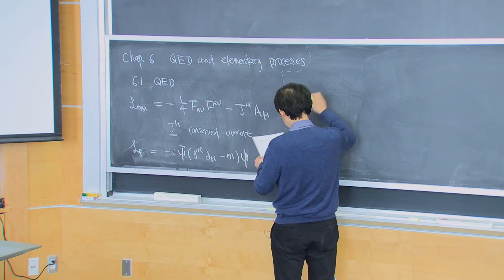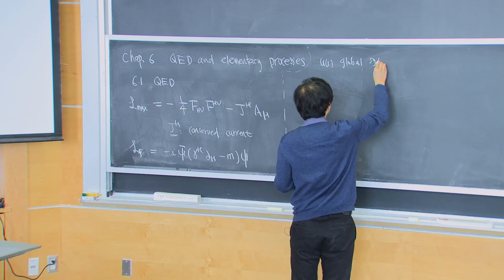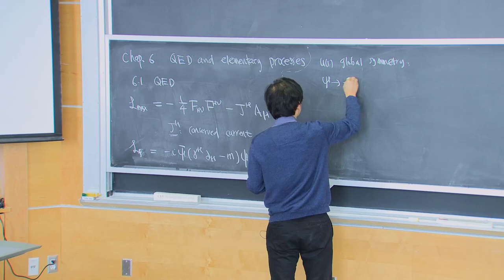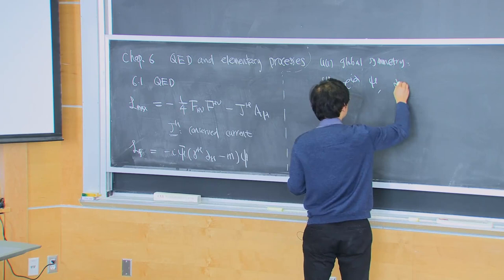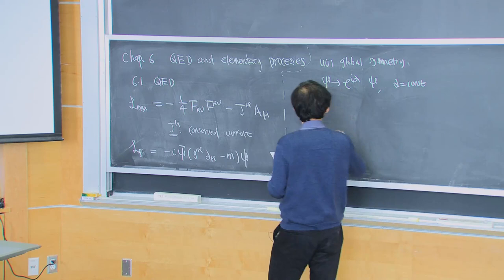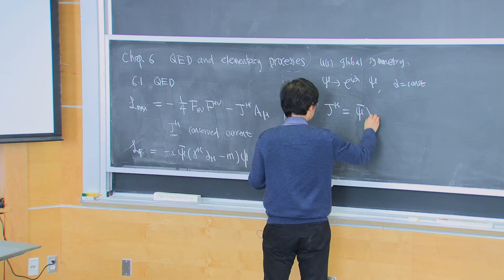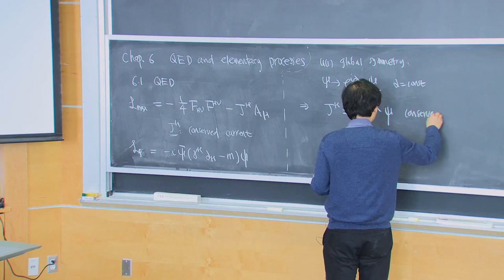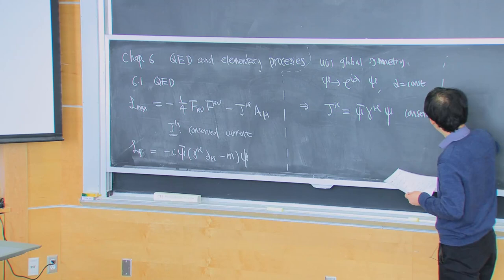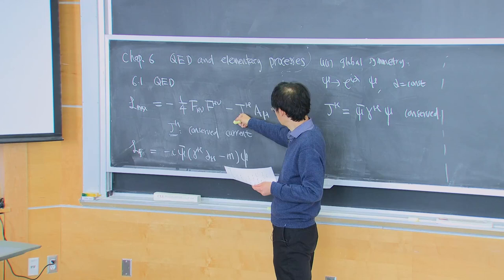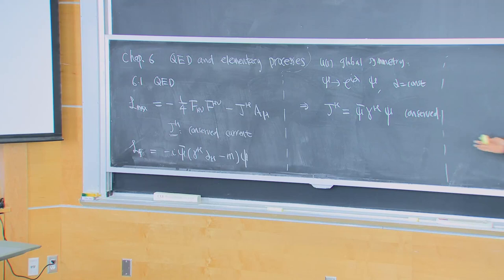For the Dirac fermion, there is a conserved current because there is a global symmetry — a U(1) global symmetry corresponding to ψ → e^{iα} ψ with α a constant. This leads to a conserved current J_mu.